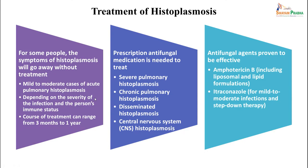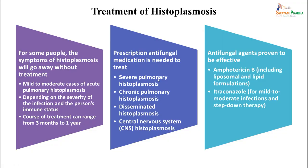Treatment of histoplasmosis: mild to moderate acute pulmonary cases may resolve without treatment. For severe histoplasmosis, chronic disease, disseminated disease, and CNS involvement, antifungal medication is needed. Amphotericin B including liposomal or lipid formulations is used for severe cases, and itraconazole is used for mild to moderate infection and as step-down therapy.